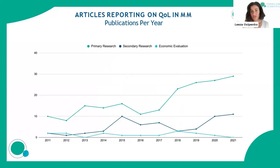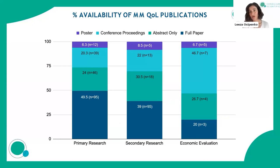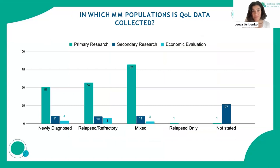We were pleased to see that reporting of quality of life data in primary research has been increasing, and this trend is reflected in secondary research as well. However, most information was available only in abstract or conference proceedings form, which is a major disadvantage — abstracts provide only top-level information with no granularity. We extracted whatever we could, but more fully published research with further details would be important for patients and for the field.